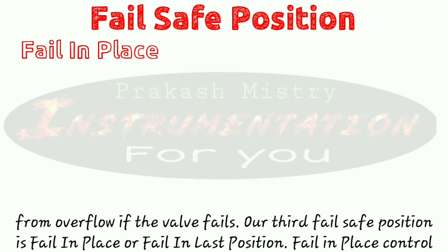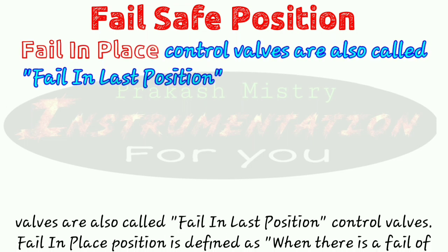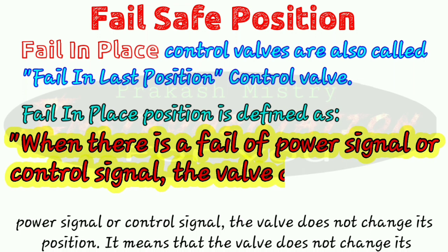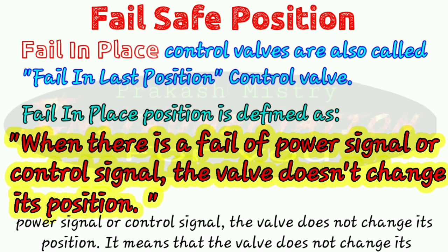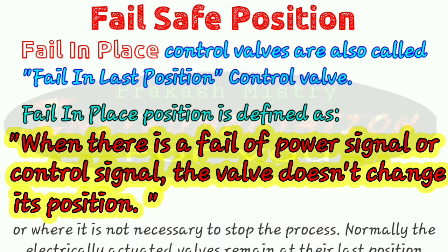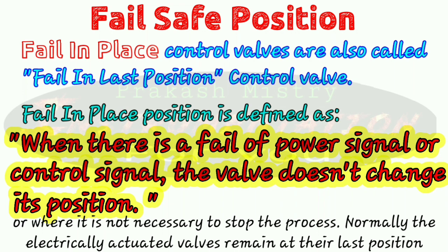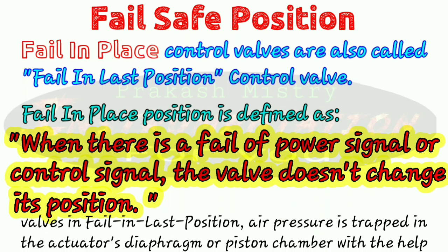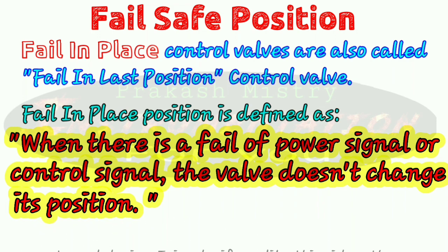The third fail-safe position is fail in place, also called fail in last position. Fail in place is defined as when there is a failure of power signal or control signal, the valve does not change its position. The valve does not react when power is lost. These fail in place positions are useful when the process cannot be shut down or where it is not necessary to stop the process. Normally, electrically actuated valves remain at their last position when the power signal fails. For pneumatic or hydraulic valves, air pressure is trapped in the actuator's diaphragm or piston chamber with the help of an external device to achieve fail in last position.